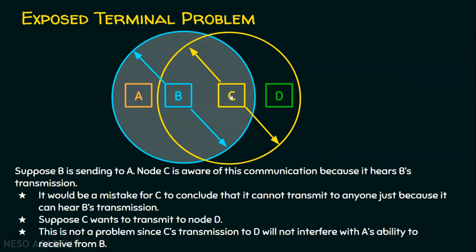It would be a mistake for C to conclude that it cannot transmit to anyone just because it can hear B's transmission. Suppose if C wants to send to D, this is not a problem. Because C's transmission to D will not interfere with A's ability to receive from B.